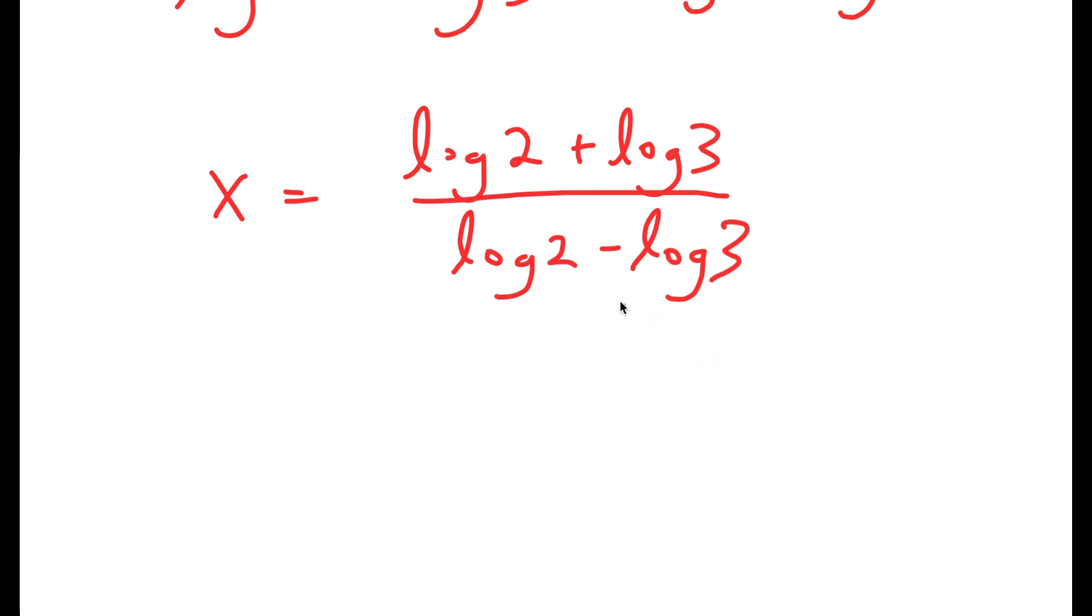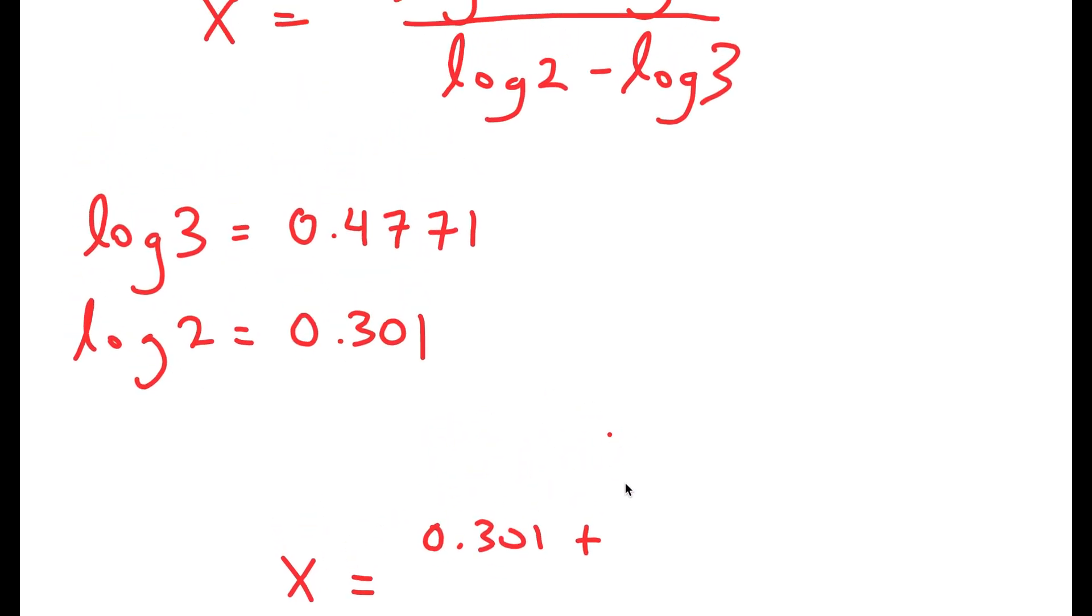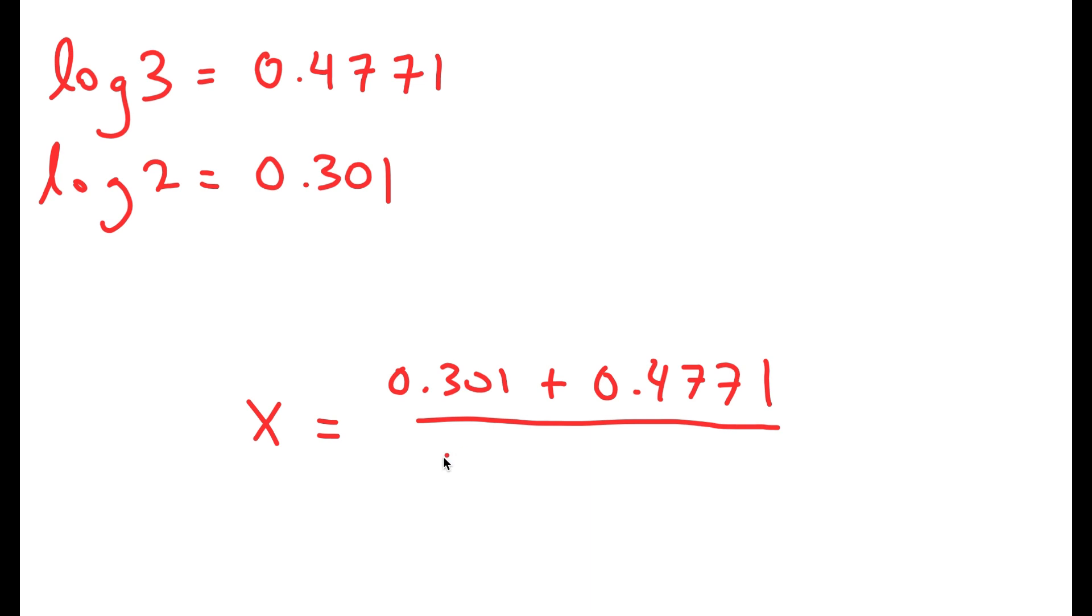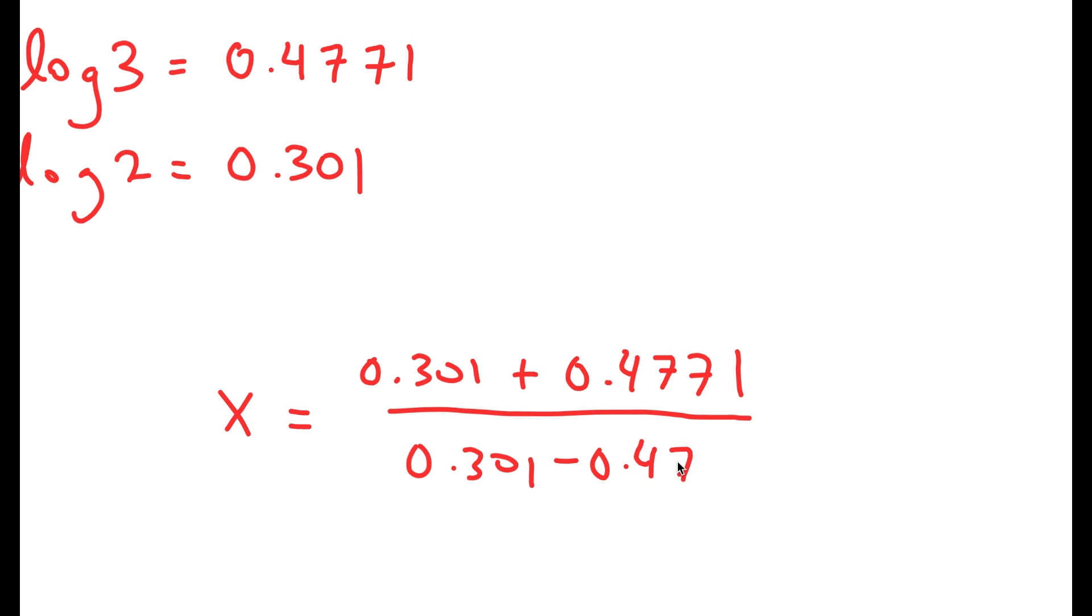Now all there's left to do is to plug in the values of log 3 and log 2. So log 3 is equal to 0.4771 and log 2 is equal to 0.301. So now I get x is equal to 0.301 plus 0.4771 over 0.301 minus 0.4771.